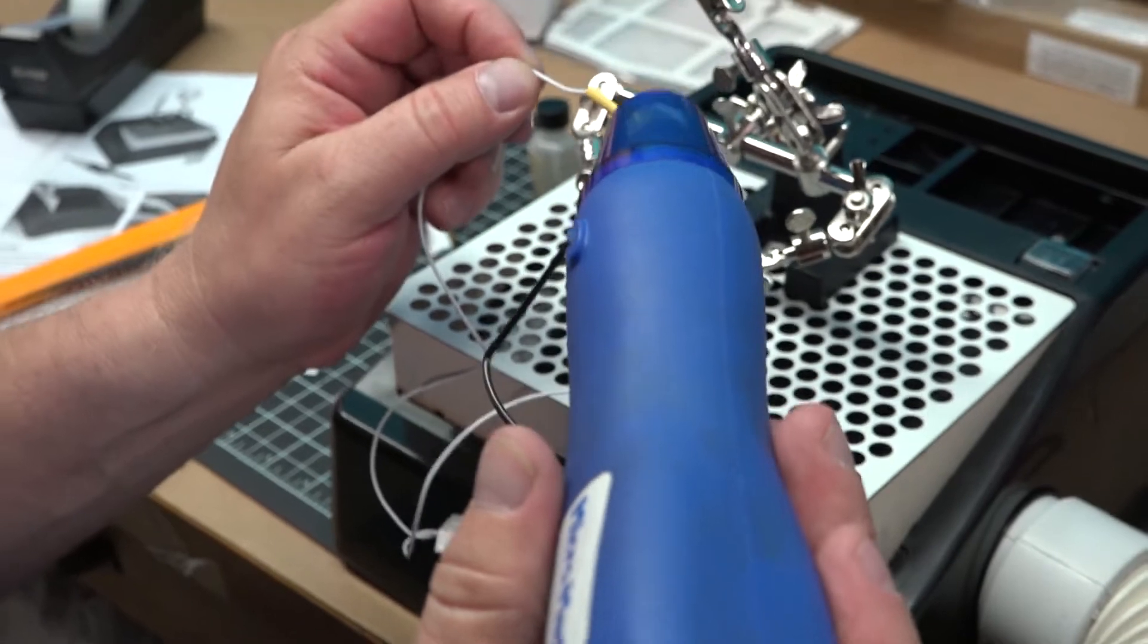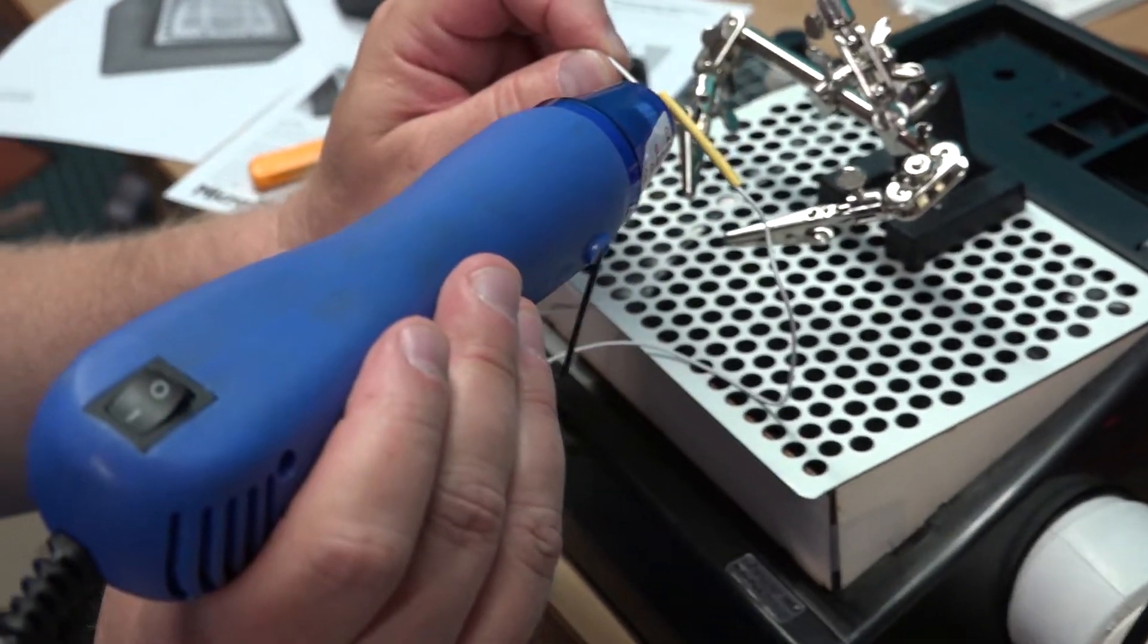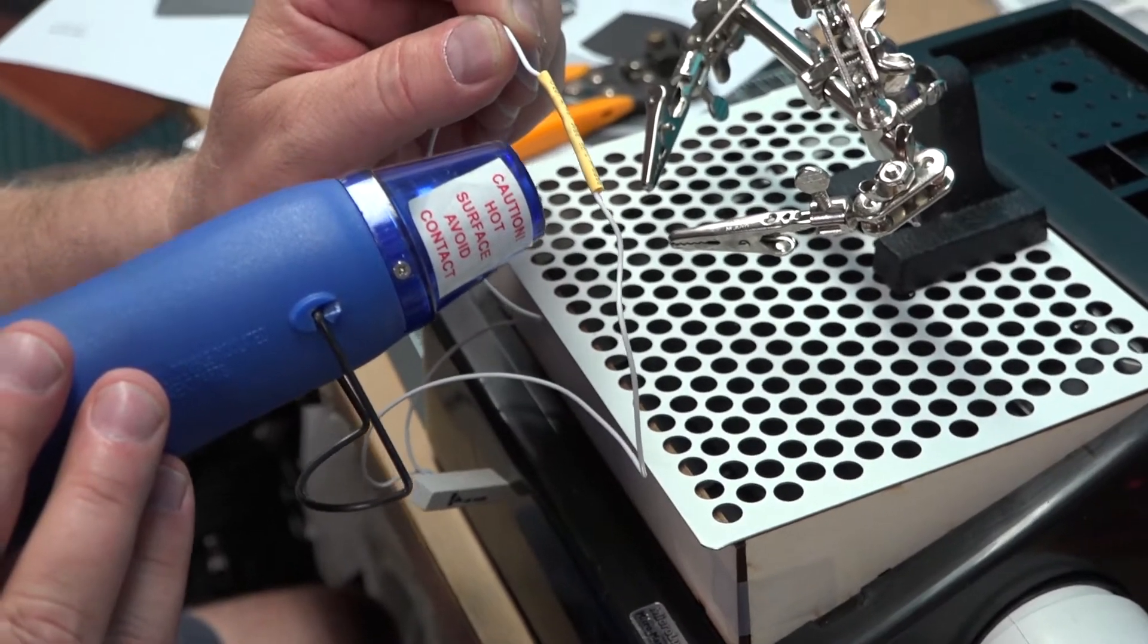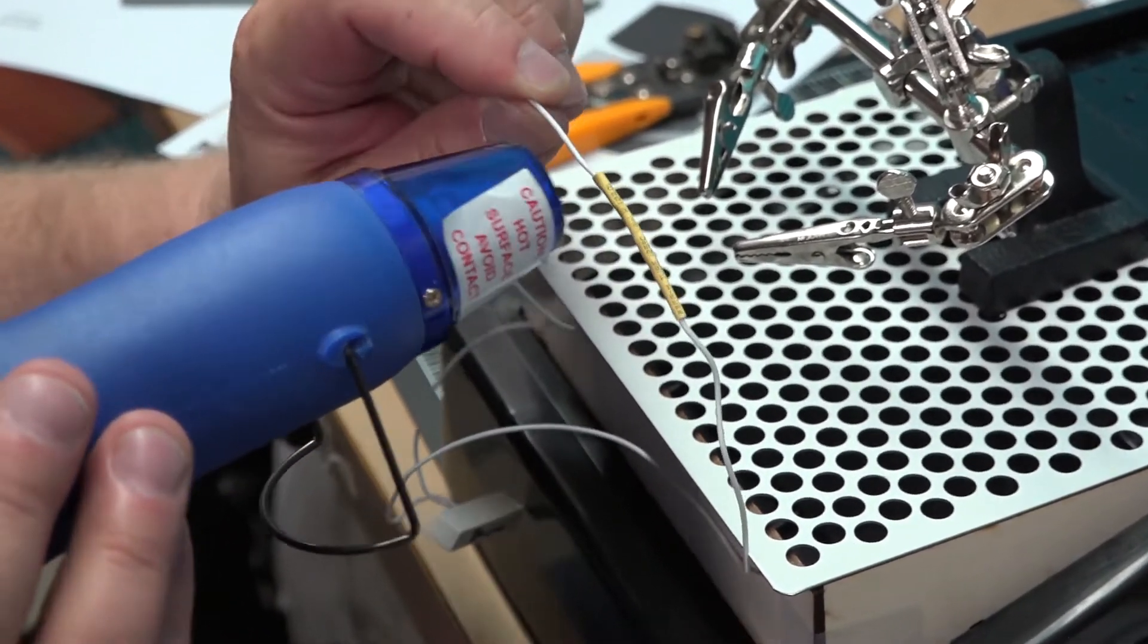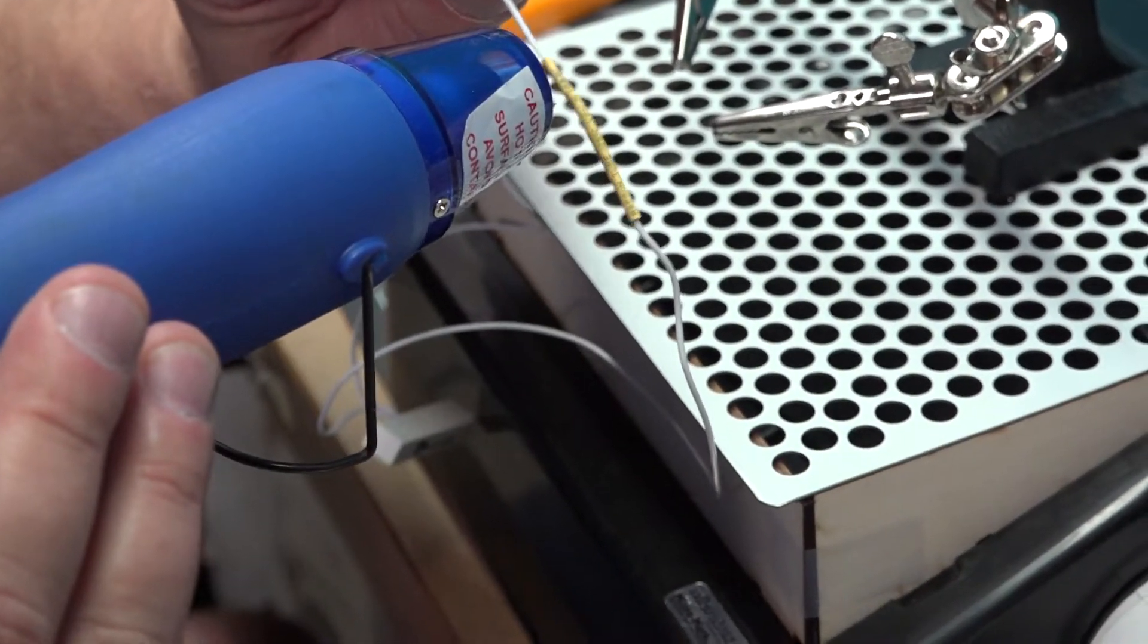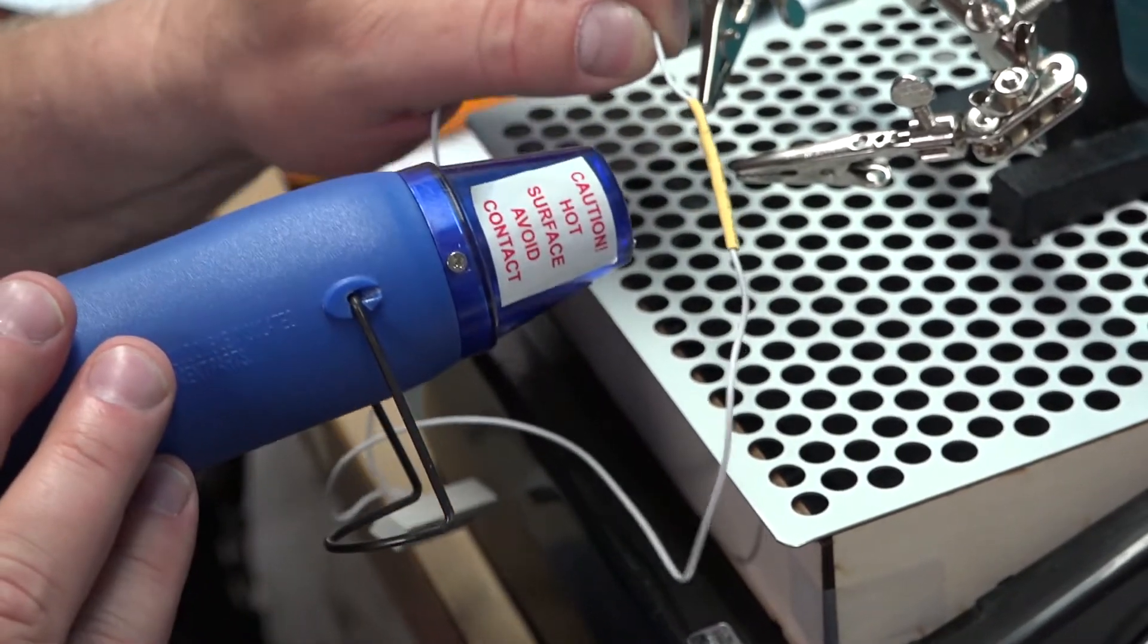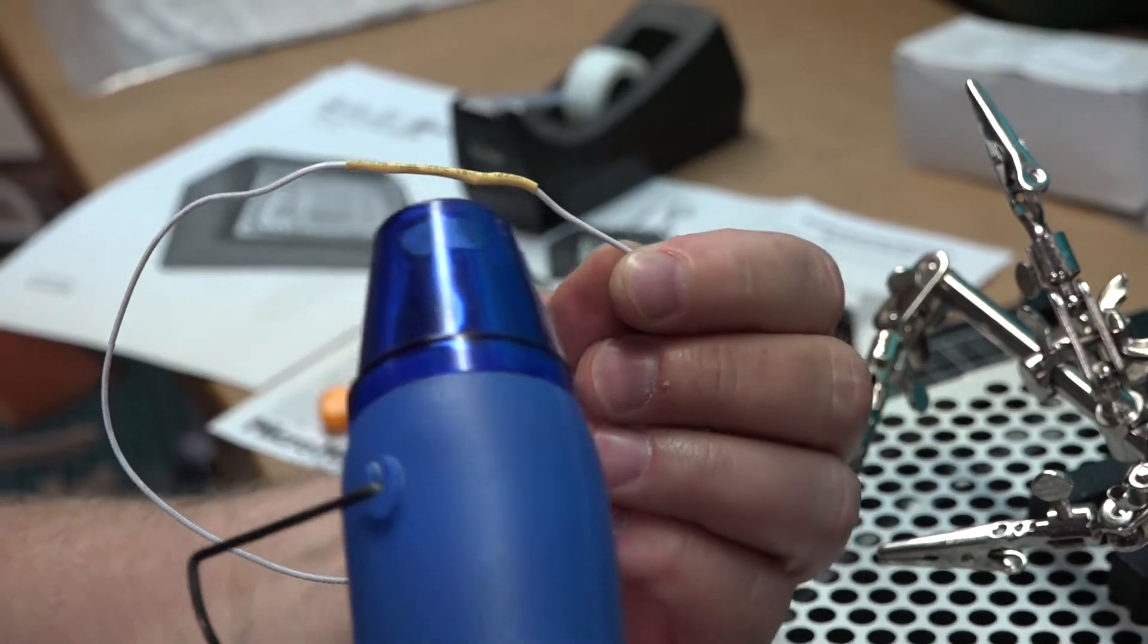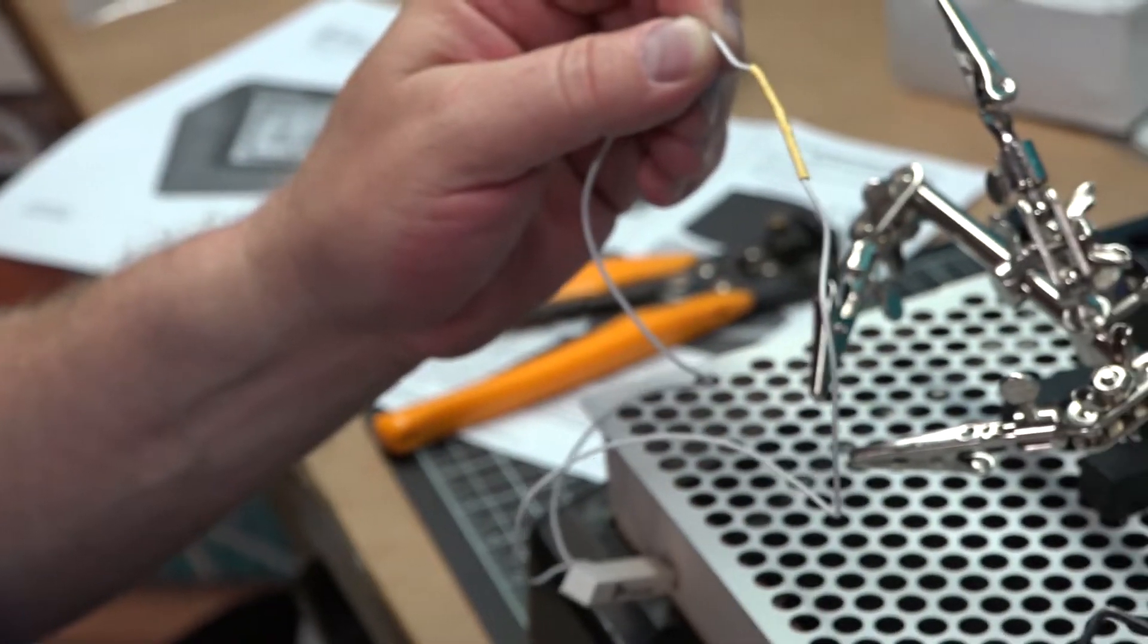And you can see the heat shrink tubing collapsing and shrinking in diameter around my joint to make a nice clean connection.